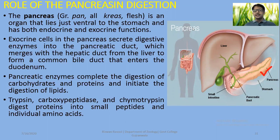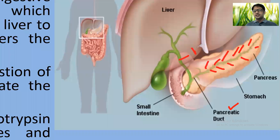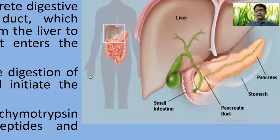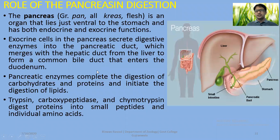As you can see, the pancreatic duct receives pancreatic juice from various parts of the pancreas. Ultimately, the pancreatic duct joins the hepatic duct coming from the liver. The hepatic duct and the pancreatic duct together form the common hepato-pancreatic duct, which ultimately releases its contents into the first part of the small intestine, i.e., the duodenum.